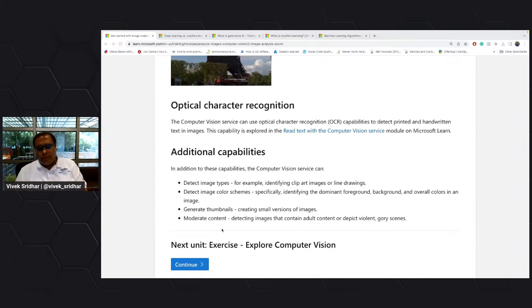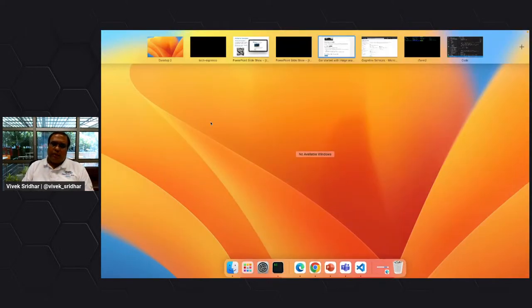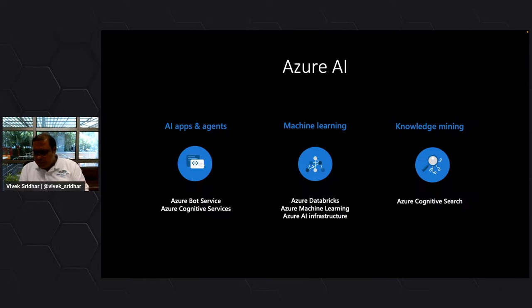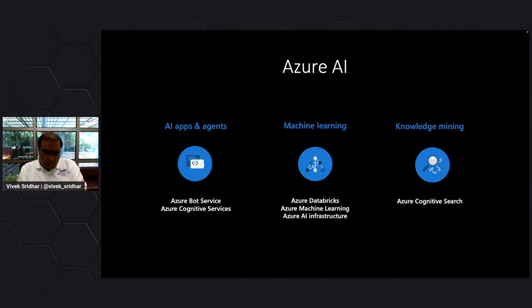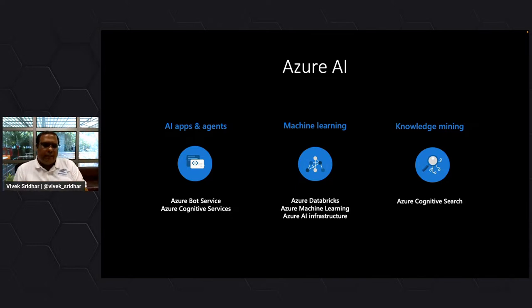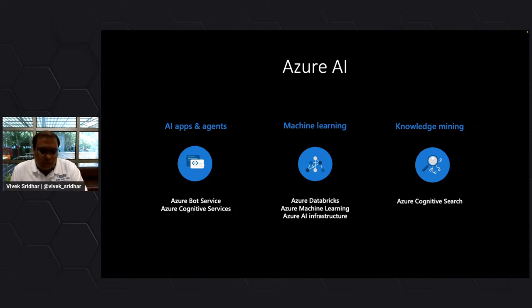That is where custom vision comes in. In Azure AI there are three buckets: applied AI which is Azure cognitive service — what I'm discussing today; within that I'm discussing computer vision and custom vision. Azure researchers are building lots of models in the backend and providing them as a service. Within this service you can also use custom speech, custom vision, and other things.